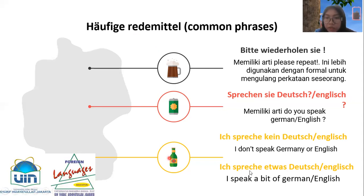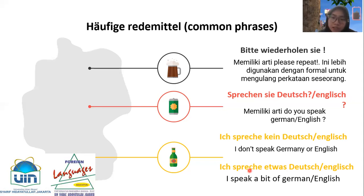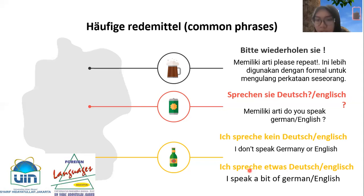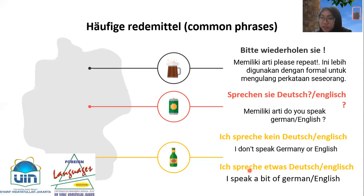'Ich spreche etwas Deutsch' — if earlier we said we can't speak German or English, but we can a little bit, we can say 'Ich spreche etwas Deutsch' or 'Ich spreche etwas Englisch', meaning 'I speak a bit of German' or 'a bit of English'.